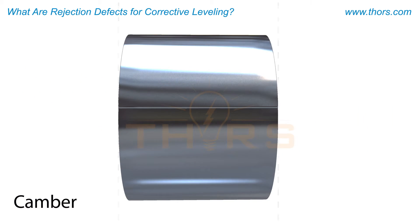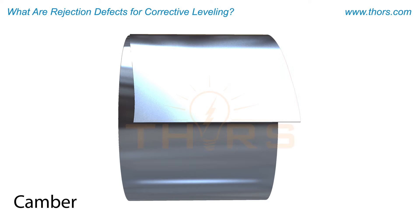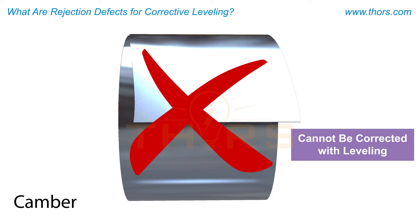Camber is observed when the side edge of a material deviates from being straight. This is essentially due to one side of the material being elongated more than the other. Camber cannot be corrected by leveling and will only be alleviated in some cases by recutting the material to the correct form.